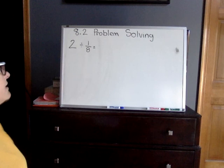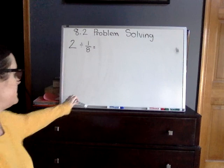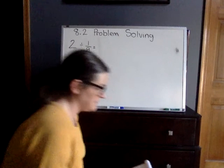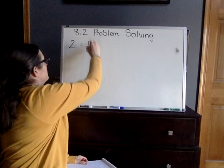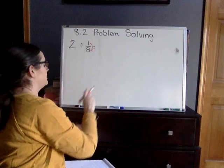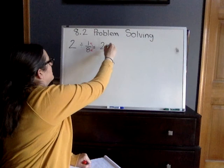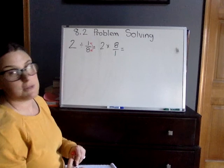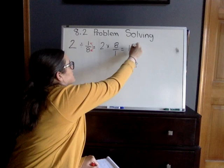Up on the board here we have our two numbers from that problem, which is 2 and 1/8. So we have 2 divided by 1/8, and we're going to do what we did on Tuesday with lesson 8.1. We're going to first flip our fraction, so 2 divided by 1/8 is really the same thing as 2 times 8/1.